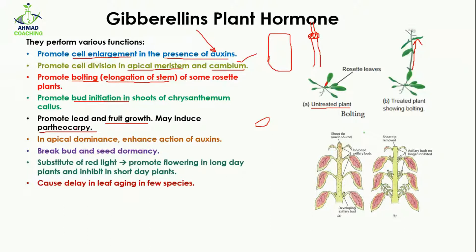In apical dominance, gibberellin enhances the action of auxins. As covered in the auxins lesson, apical dominance allows the shoot to increase in length while preventing side branching. If side branches are forming, there is no apical dominance, but if the shoot is increasing in size, apical dominance is taking place.